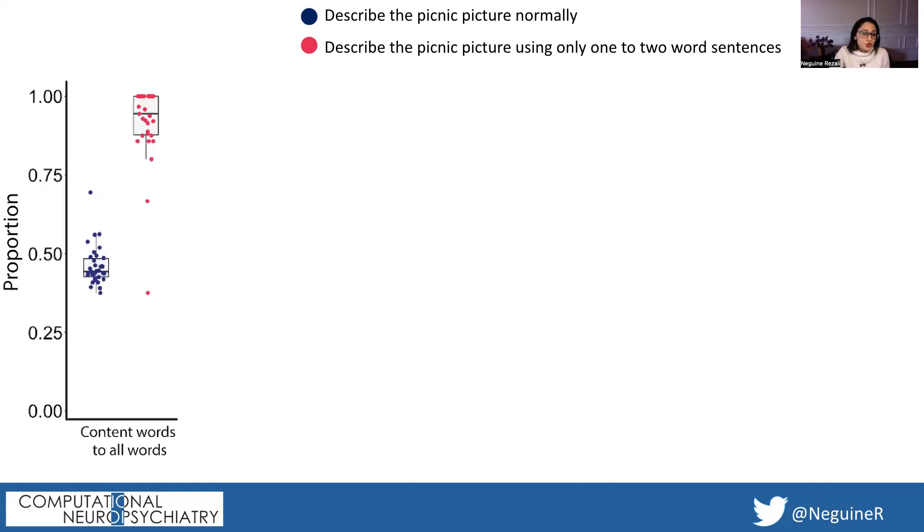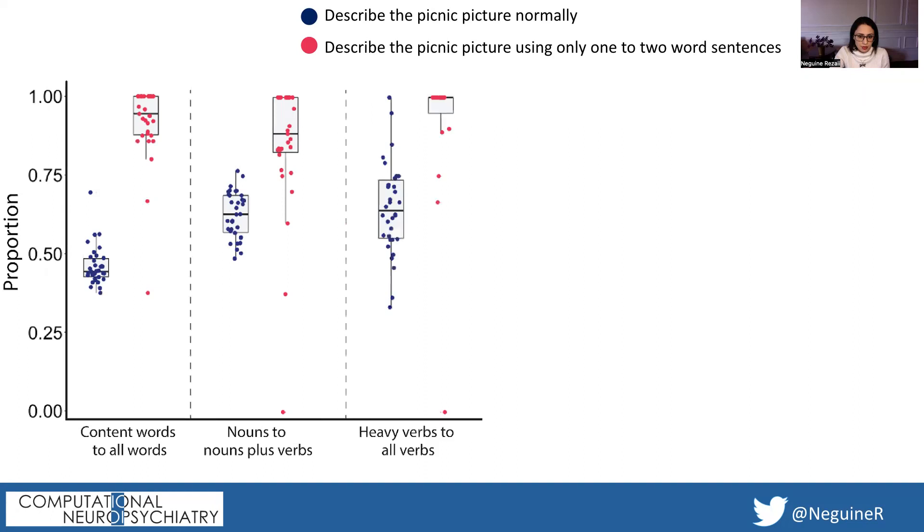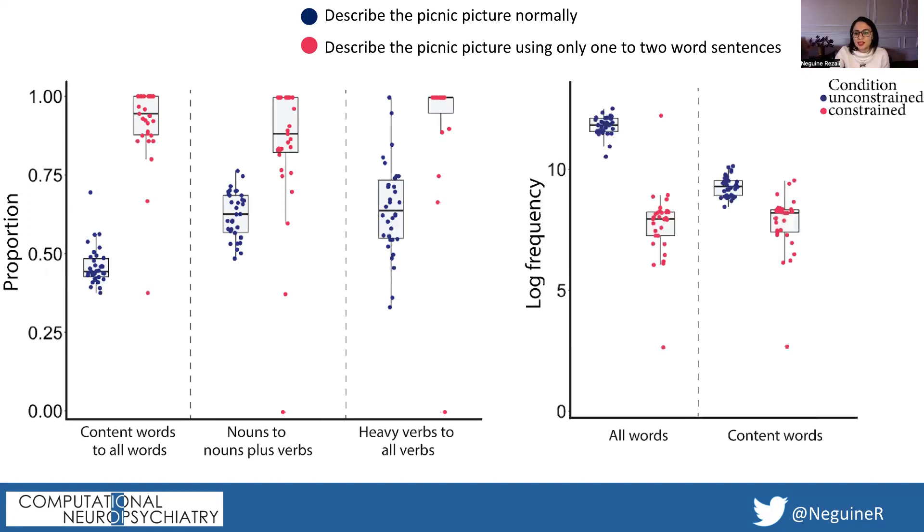We found that short sentences contain more content words than function words, more nouns than verbs, more heavy verbs than light verbs, the exact same pattern as patients with agrammatism. With the end result of short sentences having lower frequency words, which was true for both all words and content words.